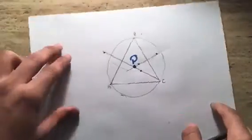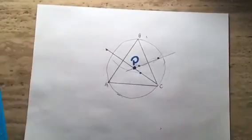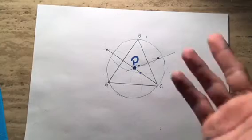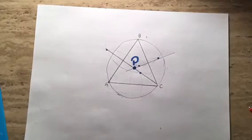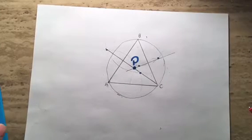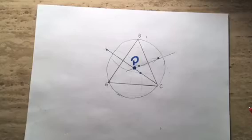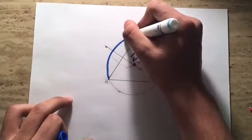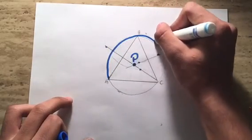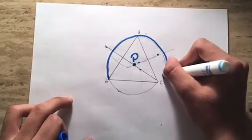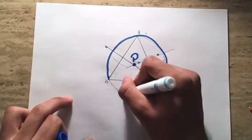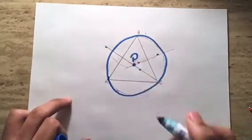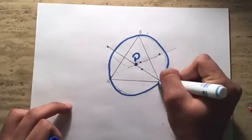Once you do that, you should see a circle around the triangle. Outline the circle so you can see it crisp and clean, and make sure that it's touching all three vertices.